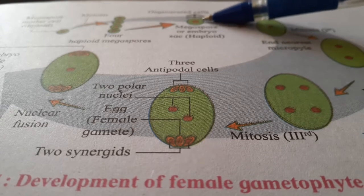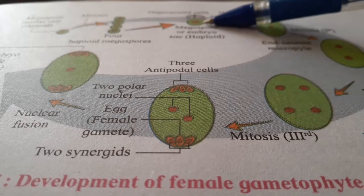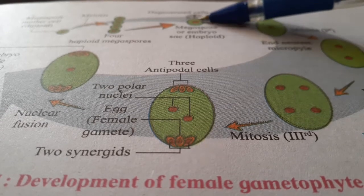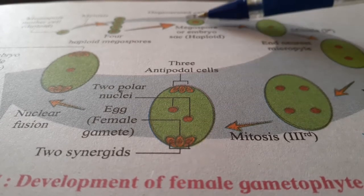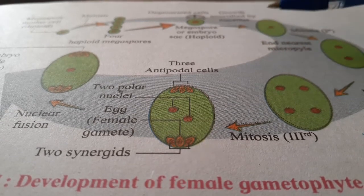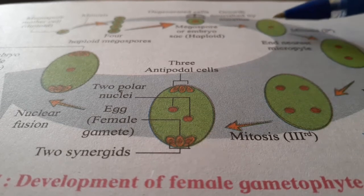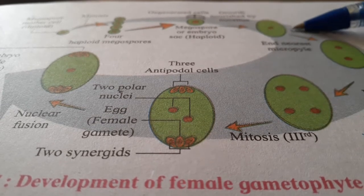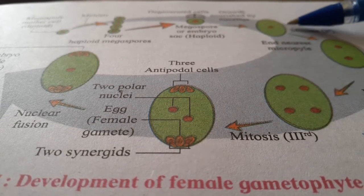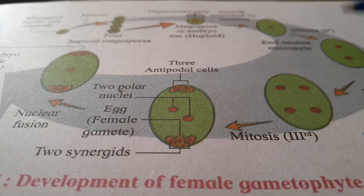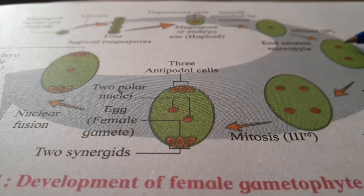This remaining megaspore undergoes mitotic division. After the first mitotic division, they produce 2 nuclei.